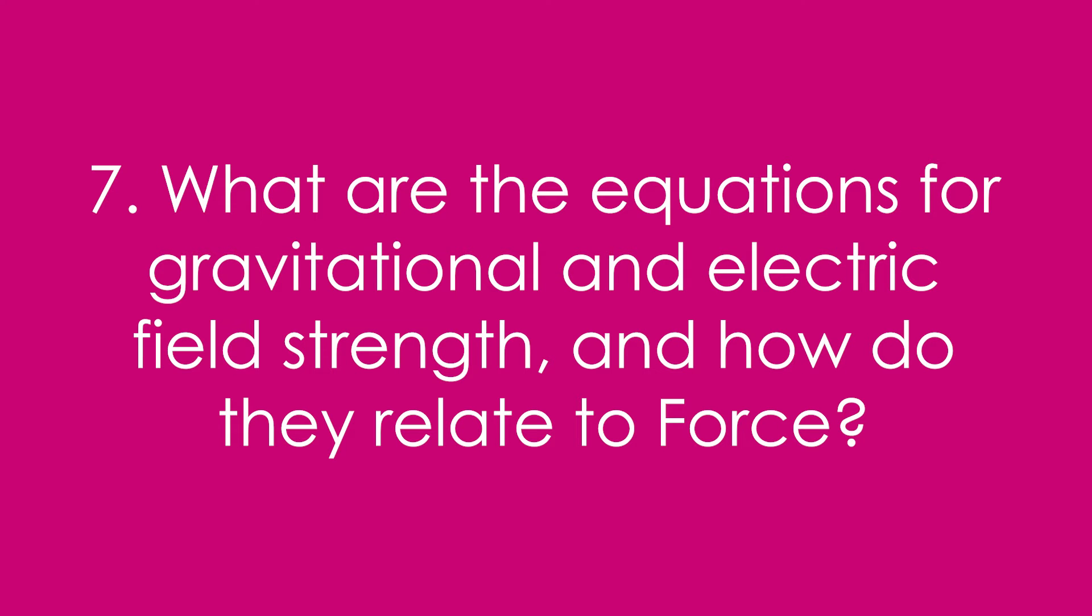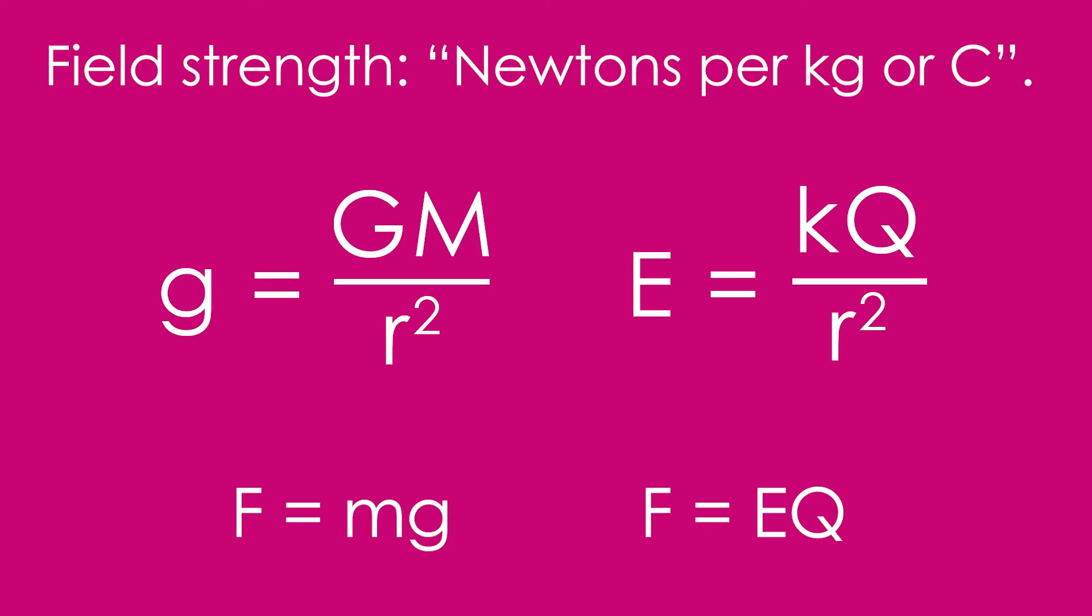Seven, what are the equations for gravitational and electric field strength, and how do they relate to force? Field strength is force per something, so newtons per kilogram or newtons per coulomb. For gravitational, g equals big G m over r squared. For electric fields, it's kq over r squared. It's just like the equations for force, we just have one mass and charge instead of two.